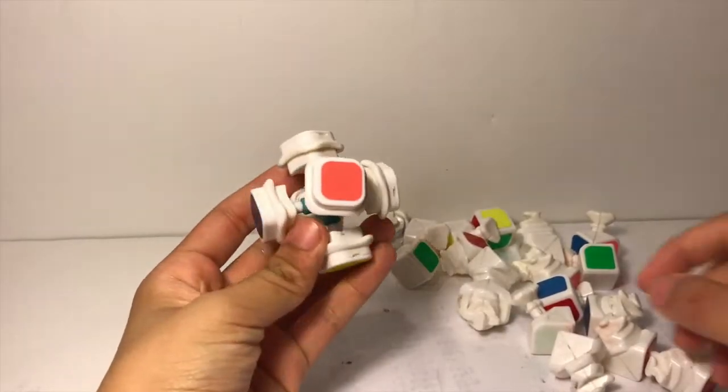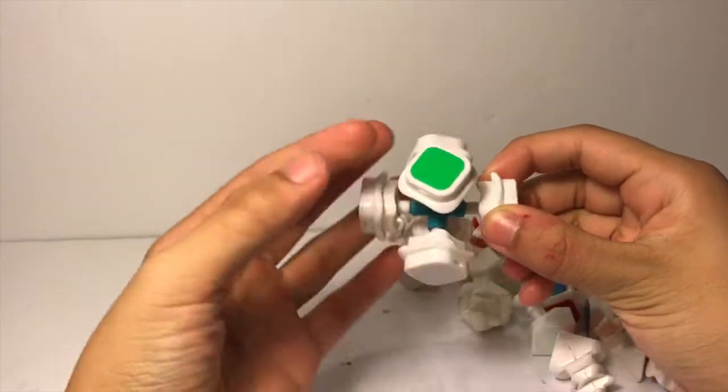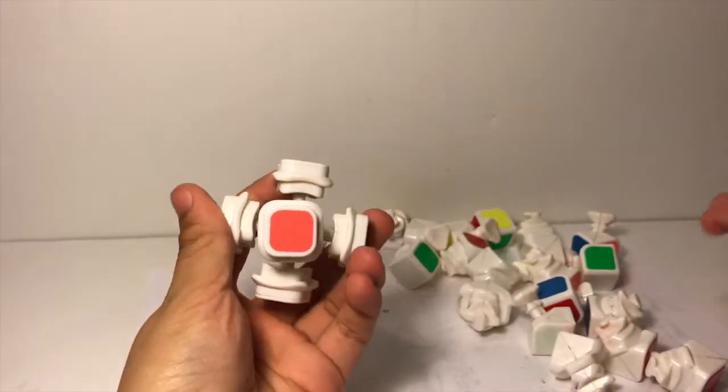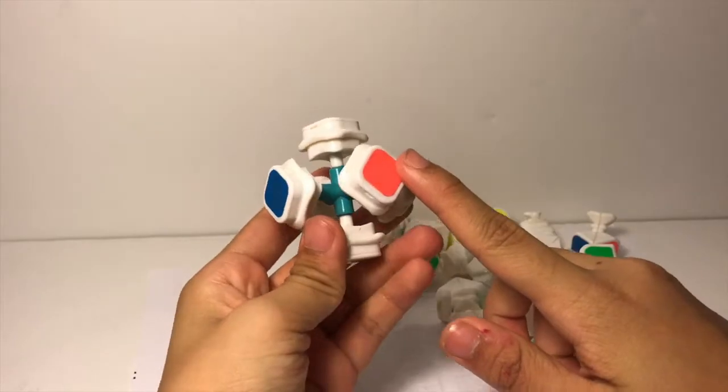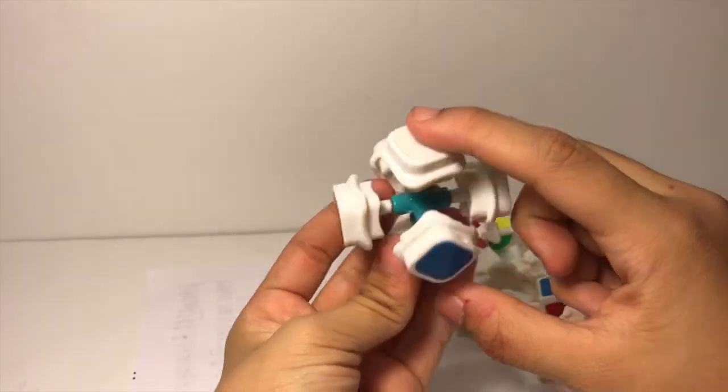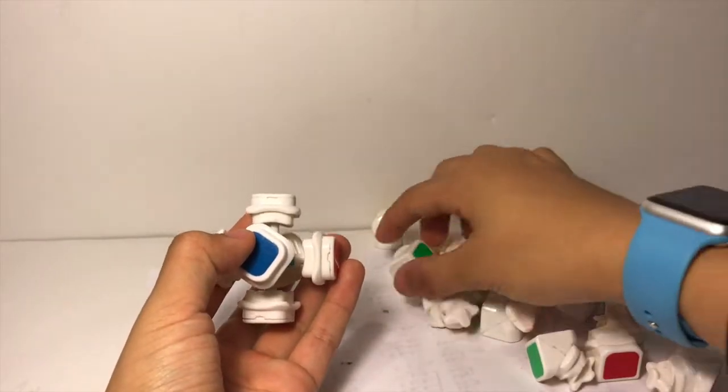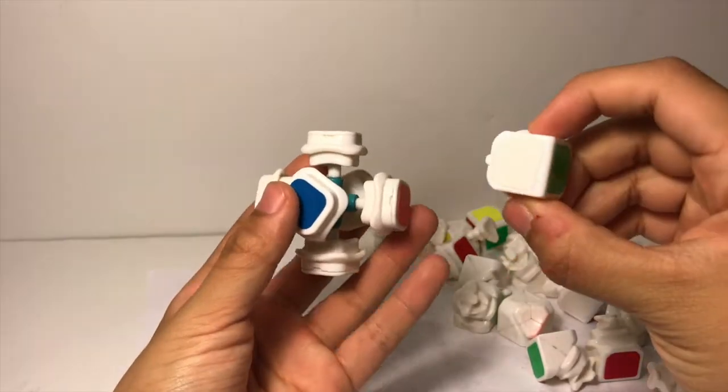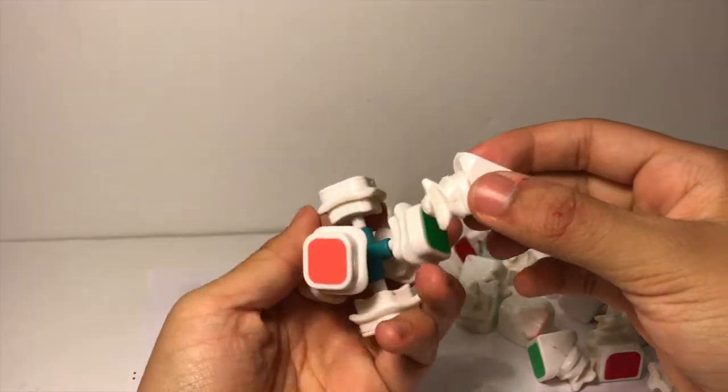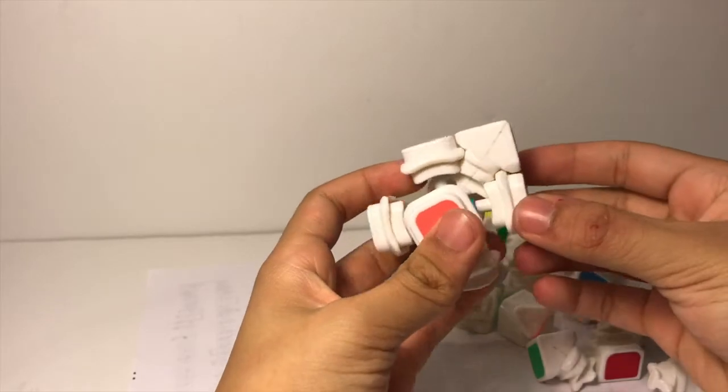I've now finished lubing my core. It spins well, and we're going to assemble this. Hopefully you have put all your centers back in the right spots. Again, red, blue, orange, green, with white on top and yellow on the bottom. Take any edge piece. I took white and green, and you're just going to put it in the correct spot, like so.